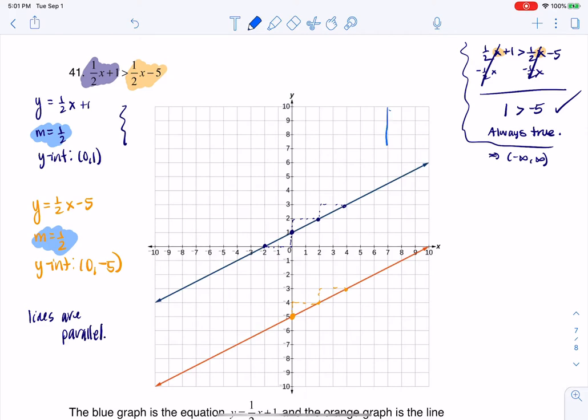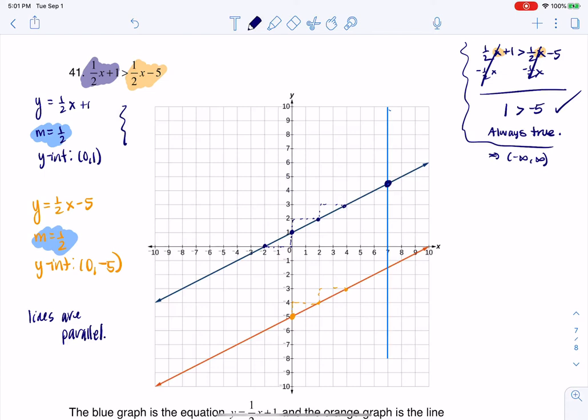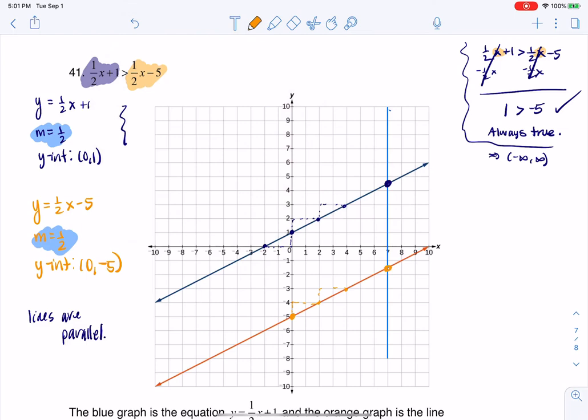So if I were to draw any x value here, I'm going to try and make that around x equaling 7. I want you to see, and I'll go ahead and change colors, that the y value here, which is around 4.5, something like that, is greater than the y value here.